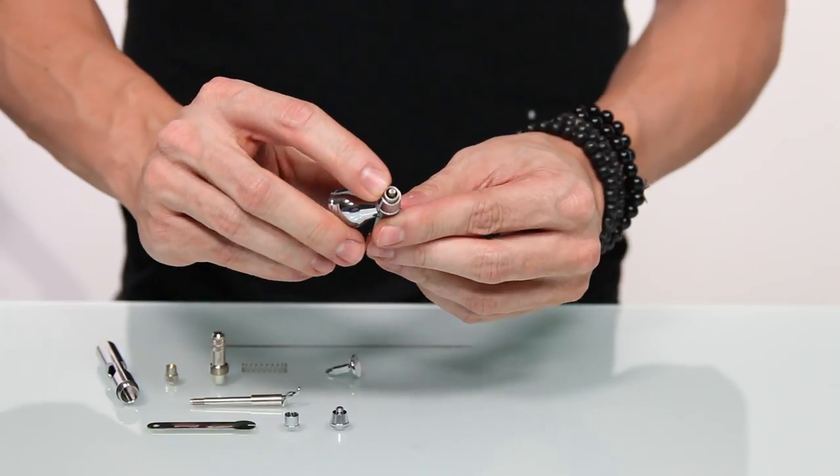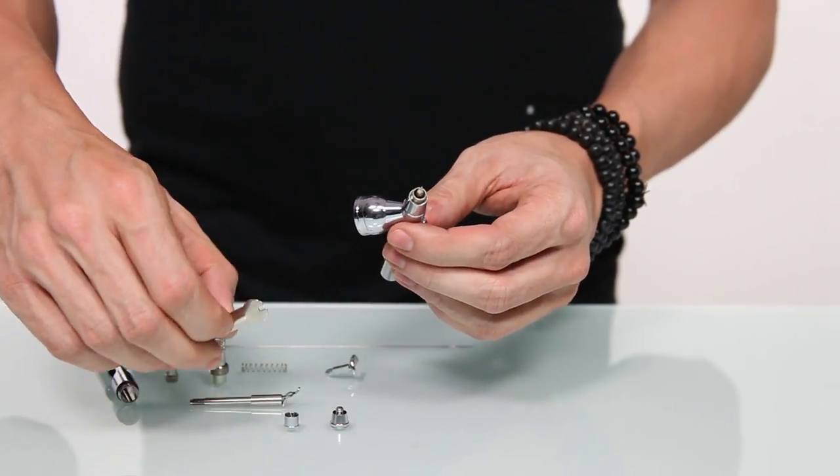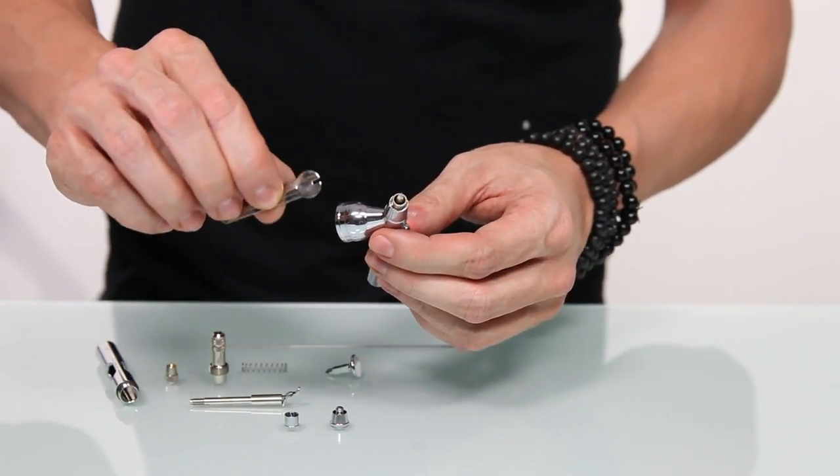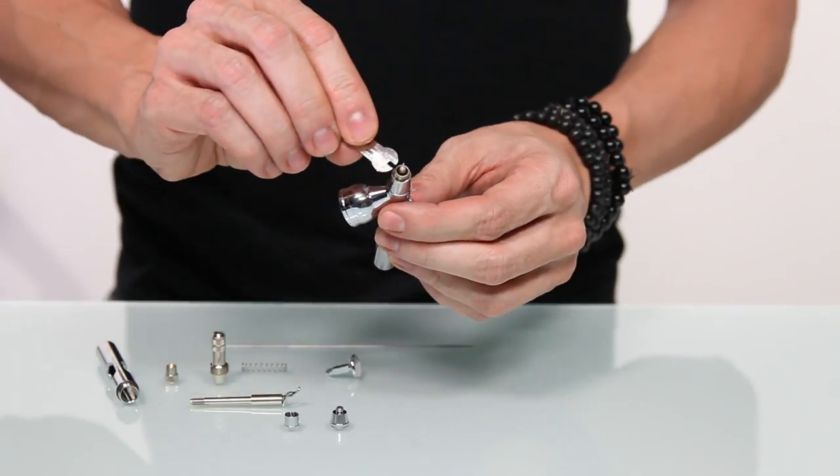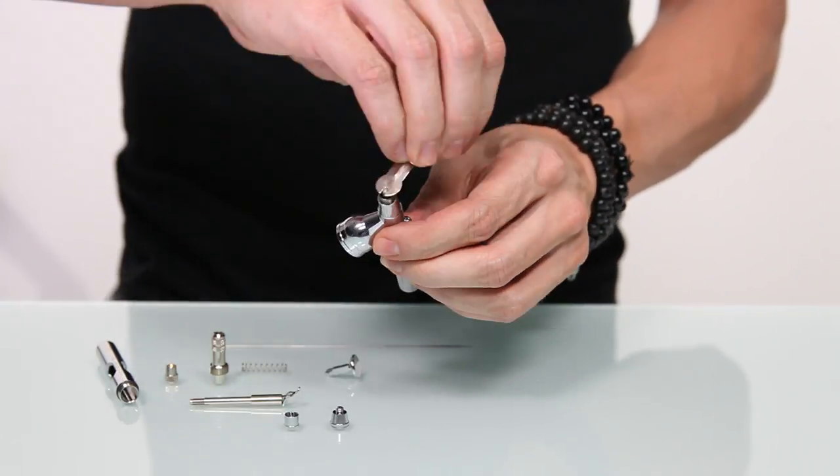Removing the nozzle cap will expose your nozzle. To remove the nozzle, you need to use the wrench on the inside of your SP-35 case. Use the wrench to loosen the nozzle one full turn.